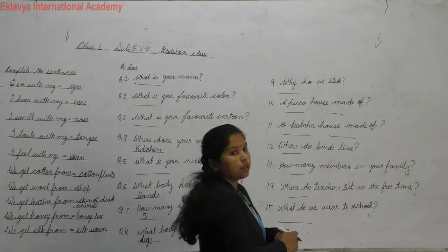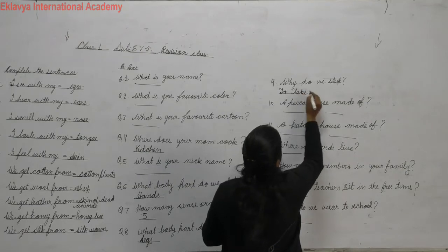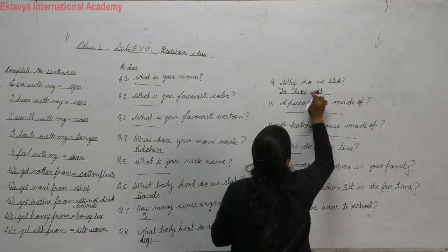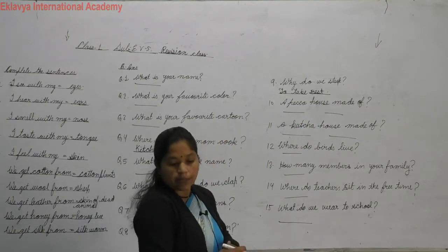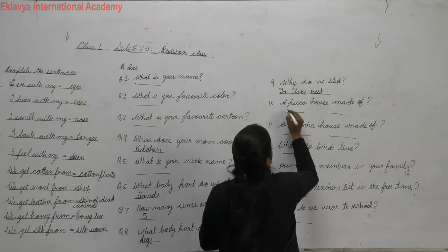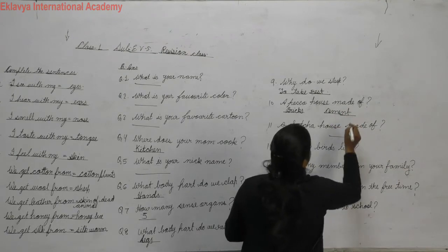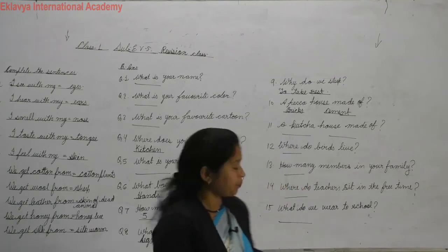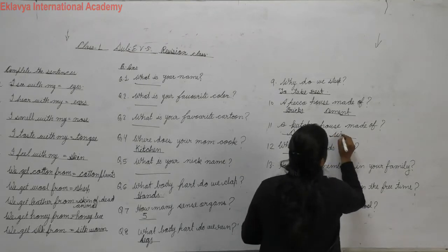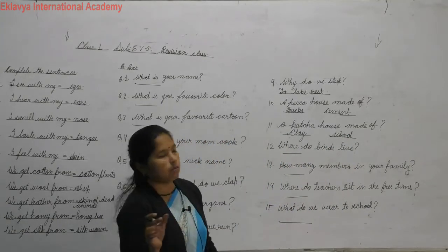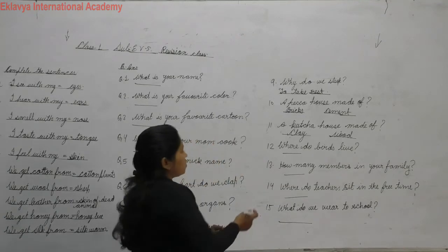Why do we sleep? To take rest — we sleep to give our body rest and relax. And a pucca house is made of bricks, cement, iron, and stone. A kachcha house is made of clay and wood. Pucca house is very strong. Where do birds sleep? In their nest.